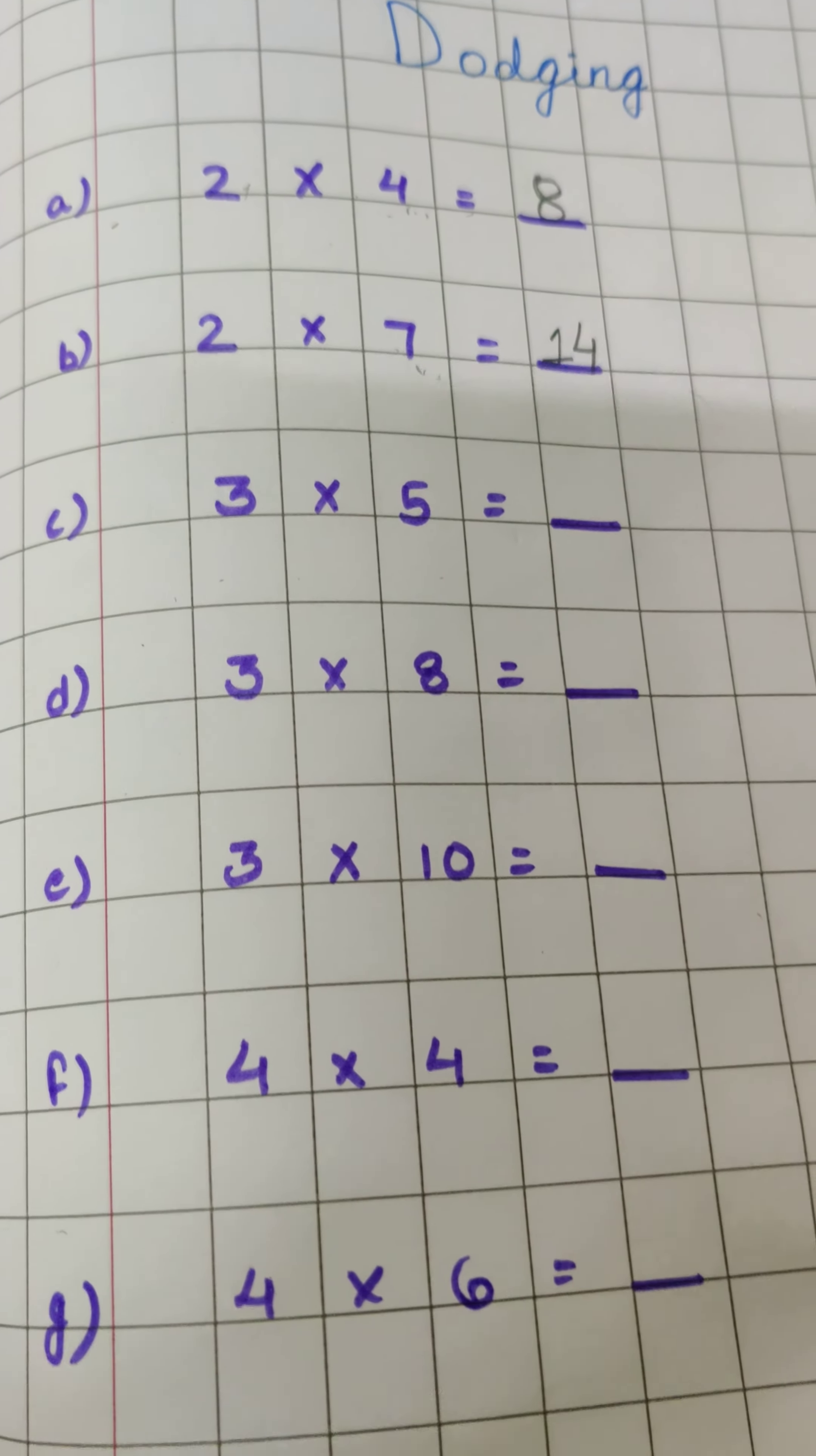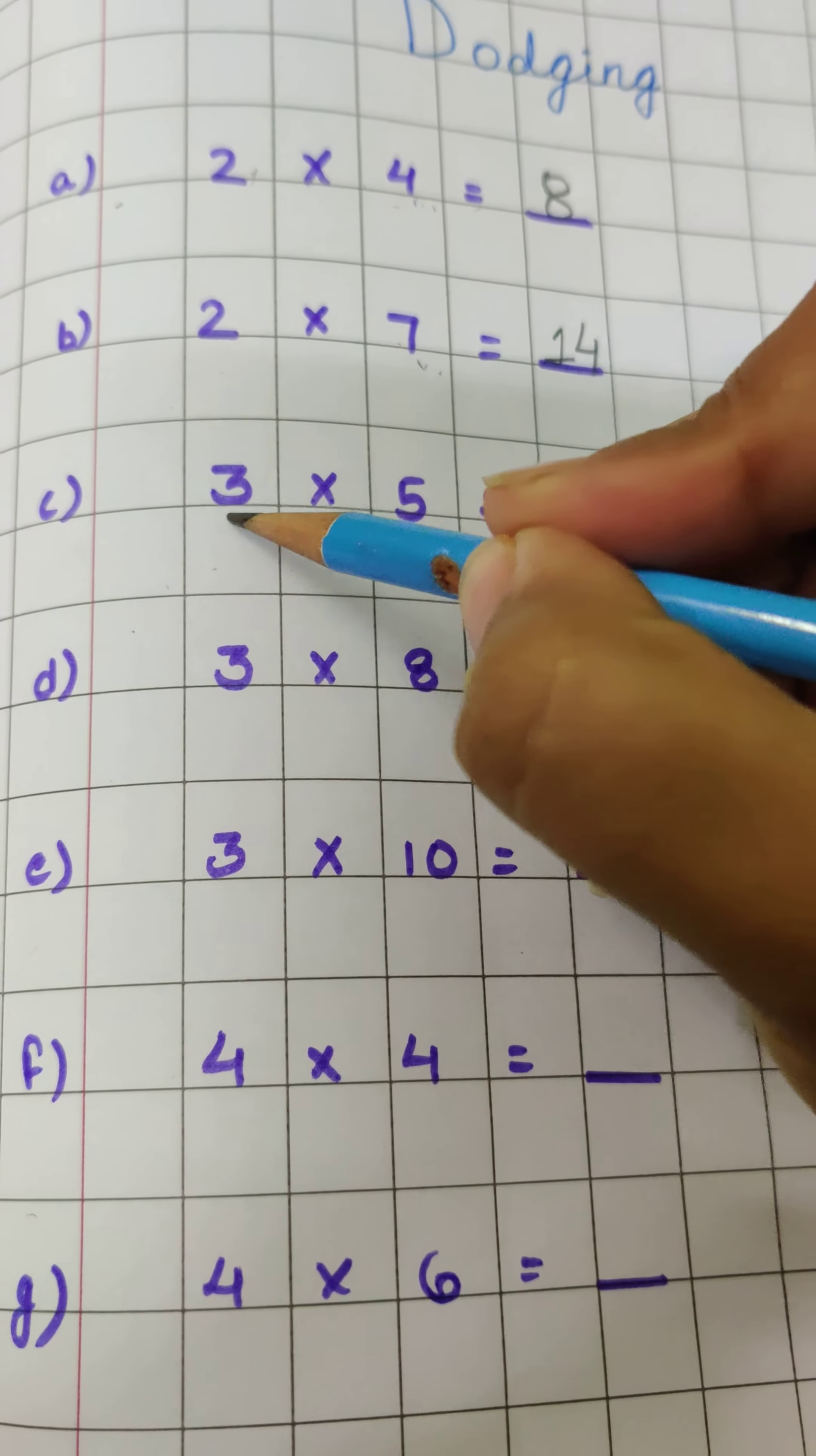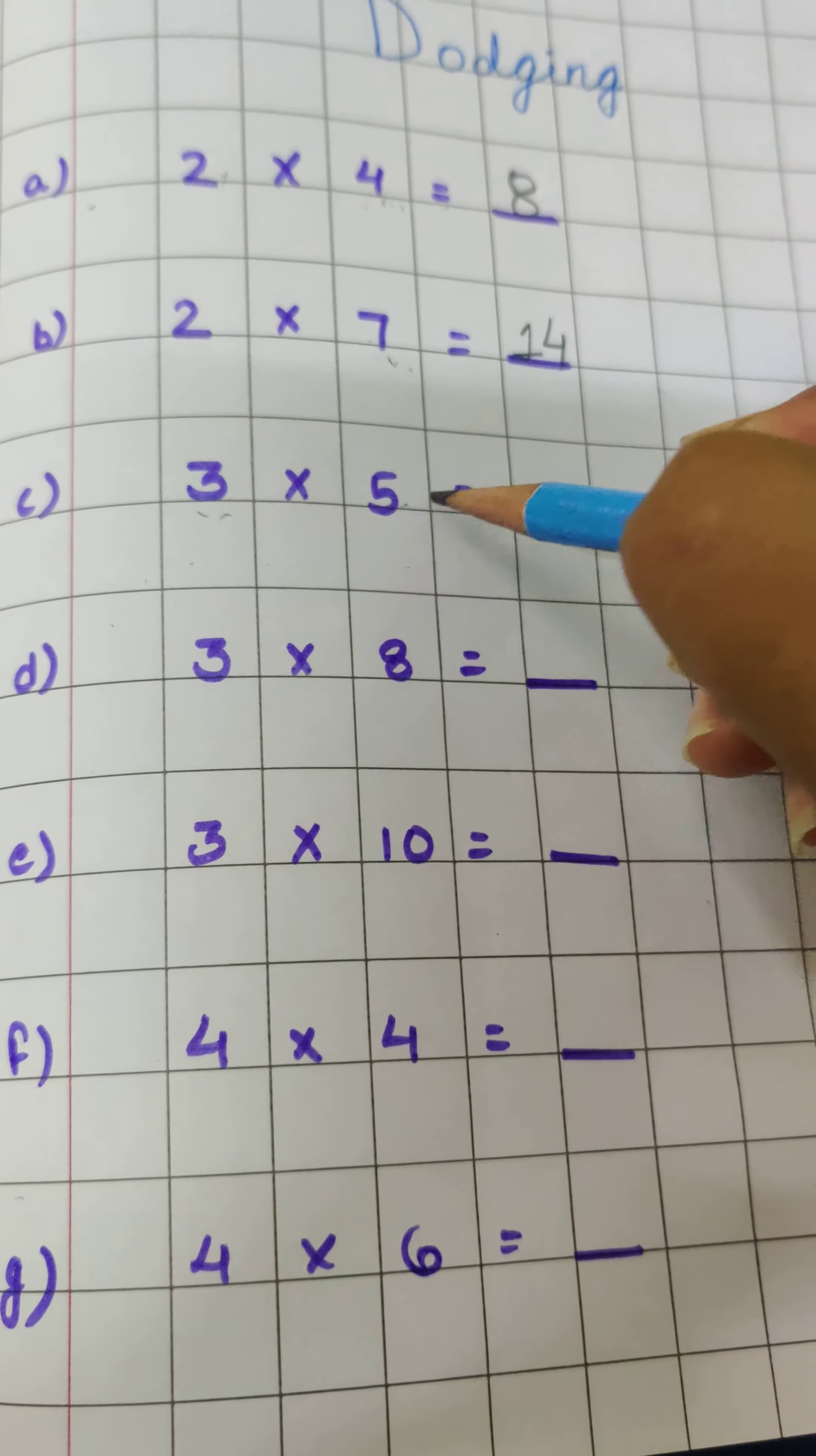So again we will fill here 14. Now come to the next one, here it's the table of 3, 3 fives are.